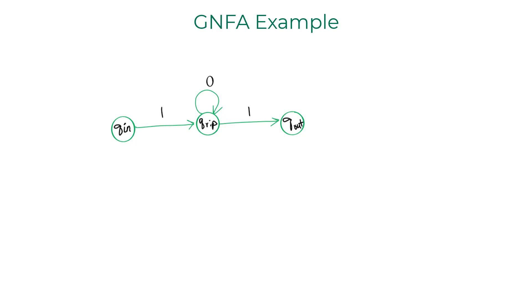The regular expression from qn to qrip is 1. qrip transitions on regular expression 0 back to itself and then transitions to qout on 1. So strings like 1 1, 1 0 1, 1 0 0 1, 1 0 0 0 1, etc. can successfully pass from qin to qout.